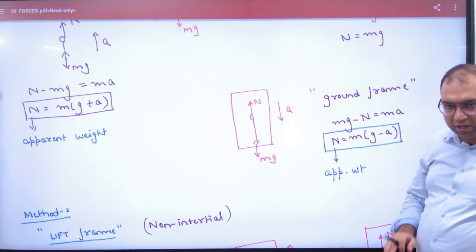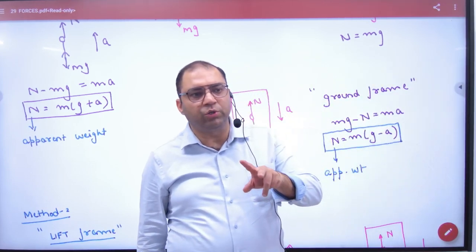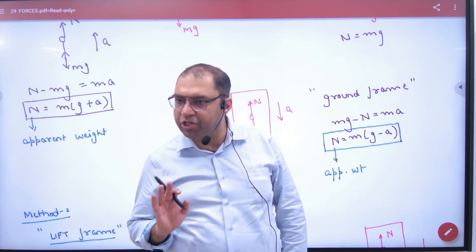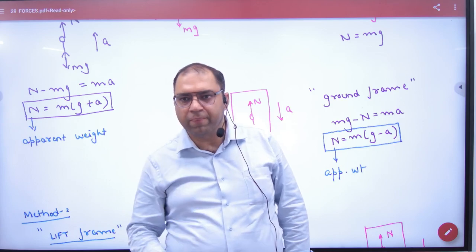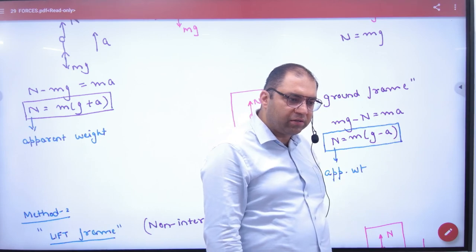N can be zero. If you suppose you are in lift and lift is broken, lift is coming down with an acceleration due to gravity g. The man is also coming down with acceleration g while standing on the weighing machine. So here a is g. So what is normal reaction? Zero.